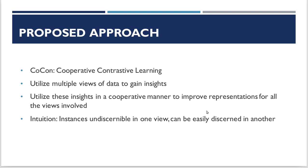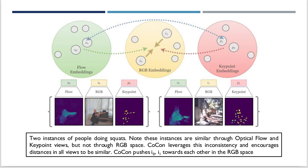We propose to utilize multiple views of data to gain insights into potential relationships, and then use these insights in a cooperative manner to improve representations for all views involved. The intuition is that instances which may not be discernible in one view can be easily identified in another. Here we have two instances of people doing squats: in the middle, RGB modality; on the left, optical flow; on the right, human pose keypoints. The RGB modality is quite different due to varying illumination and different persons, but the flow and keypoints look similar. This motivates RGB embeddings to move closer as well — a cooperative approach.